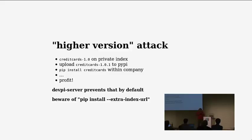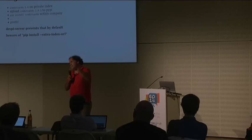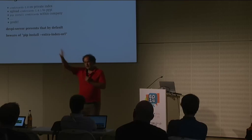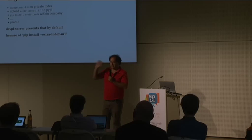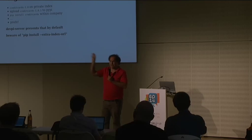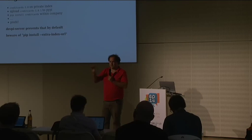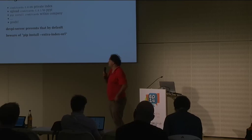By default, if you upload anything to a DevPI private index, any further lookup — even if you inherit from the PyPI cache — will be prohibited, and you have to whitelist it. If you have a package that comes from PyPI because it's an open source release of your company, you have to whitelist it. Otherwise, all PyPI is ignored. So if you install credit cards from the production index and it's not whitelisted, PyPI is not considered because there is a package in your private index.